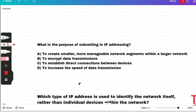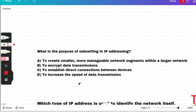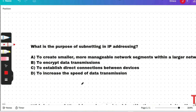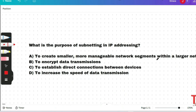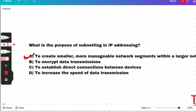What is the purpose of subnetting in IP addressing? Options are: to create smaller, more manageable network segments within a large network; to encrypt data transmission; to establish direct connections between devices; or to increase the speed of data transmission. Option A will be the correct answer. Subnetting is used to create smaller network segments within a large network, improving network management and addressing efficiency.